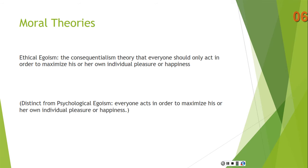Let's look at one particular version of consequentialism: ethical egoism. This is the consequentialist theory that everyone should act only in order to maximize his or her own individual pleasure or happiness. So how does Peter know how to act in a given situation? On ethical egoism, he doesn't need to consider whether it's going to make his grandma, President Trump, his wife, his son, or his sister happy. The only person he needs to consider is himself — his own happiness or pleasure.